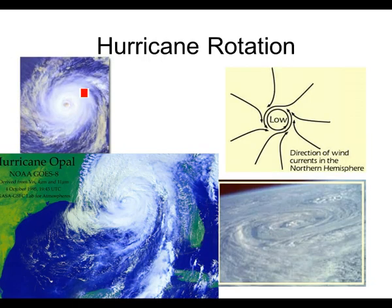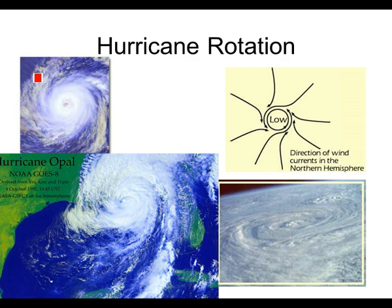Hurricane rotation — we can go through this pretty quickly. We already talked about the Coriolis effect: in the northern hemisphere, winds are turned to the right; in the southern hemisphere, winds are turned to the left. Because of that, the hurricane rotation — or tropical cyclone rotation — in the northern hemisphere is counterclockwise. So a storm going counterclockwise is in the northern hemisphere, while one going clockwise is in the southern hemisphere.